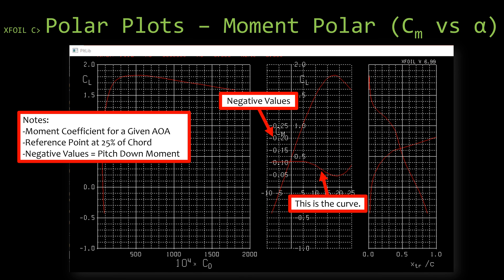So the middle plot that XFOIL plots is also the moment polar. This would be the moment coefficient versus angle of attack. The reference point, of course, is the 25% of the chord. This is usually where your aerodynamic center lives. If you're wanting more information on that, check out the aerodynamic series on my channel. And as I mentioned on an earlier slide, this plot is actually flipped. So it will plot the negative values going up.